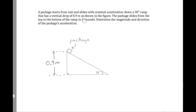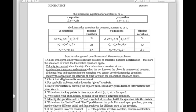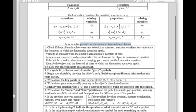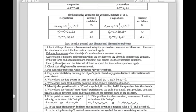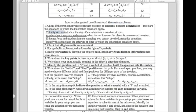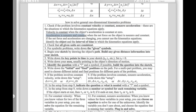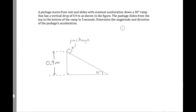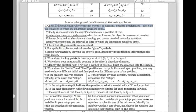We'll be using one-dimensional kinematics here, assuming you've already covered that chapter. There are two types of kinematics: constant velocity or constant non-zero acceleration. The problem told us we have constant acceleration, and the situation implies it's a constant non-zero acceleration. So we'll say this is a constant non-zero acceleration problem.